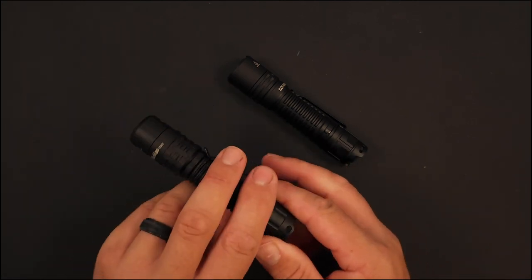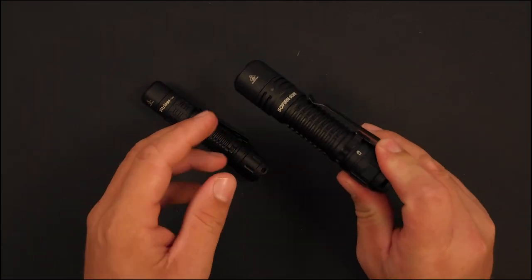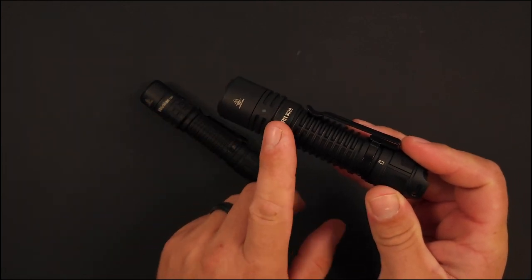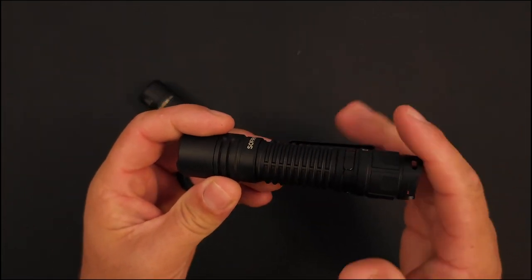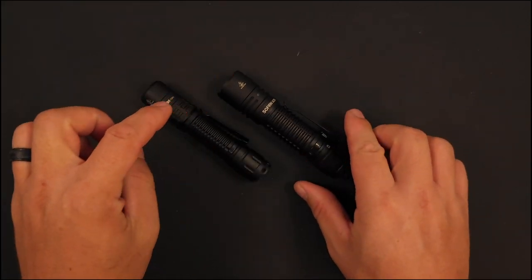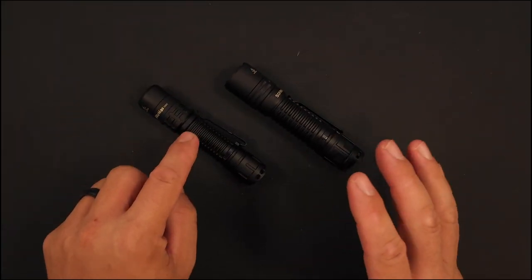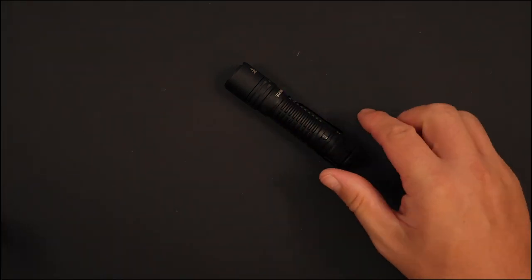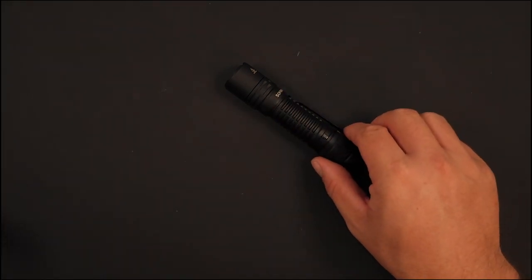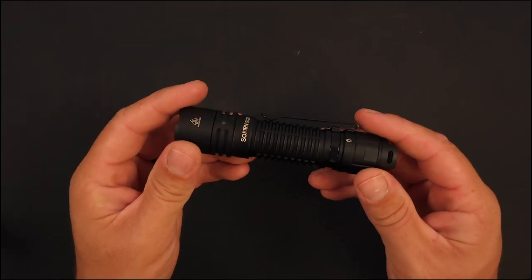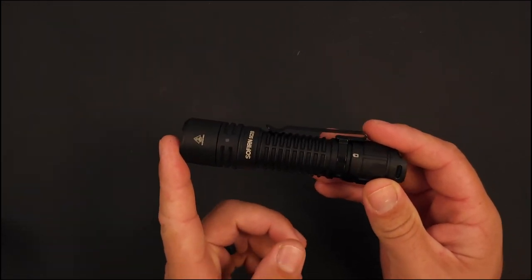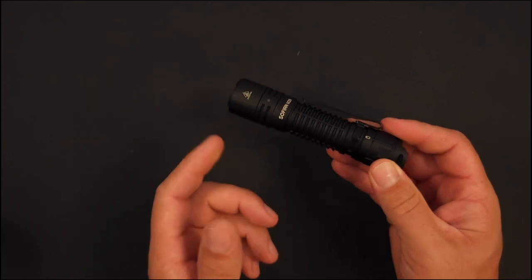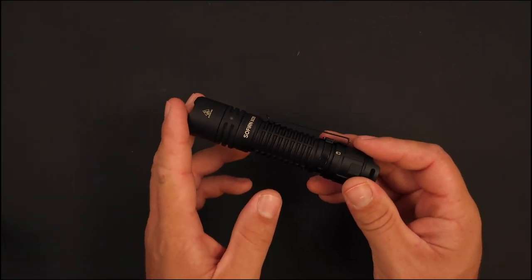Now this one is modified, but what I want to do now is - since we've seen the user interface, the battery, the body, all this - I want to take both the stock TD02 and the SC28 from Sofirn outside so we can see how the 2800 lumens of the XHP50 compares to the 2000 lumens that the TD02 will give you. Let's go ahead and go outside.